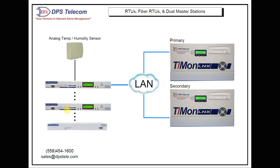The combination of these different kinds of RTUs is what was necessary to make this particular network monitoring system work. If you'd like more information about this or any similar application for your network, give us a call at 559-454-1600, or send an email to sales@dpsteli.com.